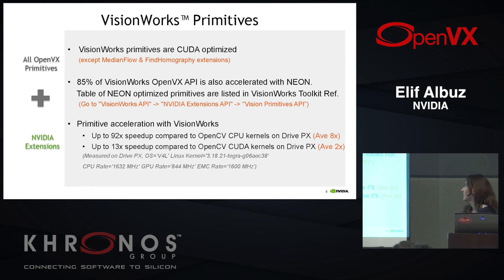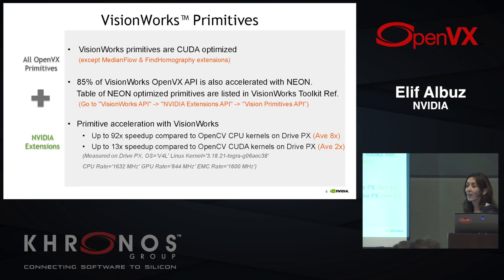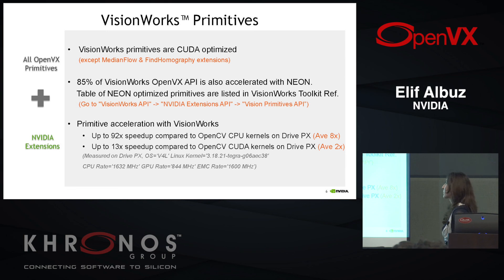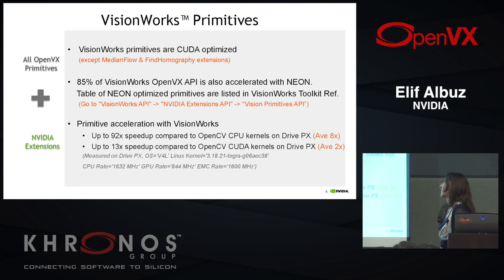Looking at primitive acceleration in VisionWorks, we have seen up to 92x speedup compared to an OpenCV CPU implementation on the Drive PX platform — the Tegra X1-based automotive platform. On average it's 8x, measured with a benchmark of 400 primitives run at different sizes and parameter settings. We also see up to 13x speedup compared to OpenCV CUDA kernels, with an average of about 2x on Drive PX. If you have a more capable CUDA desktop GPU, you see more significant speedups for these primitives.